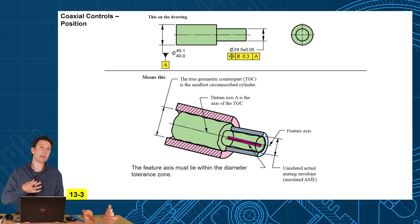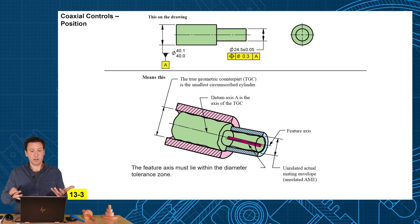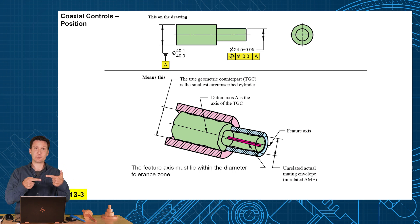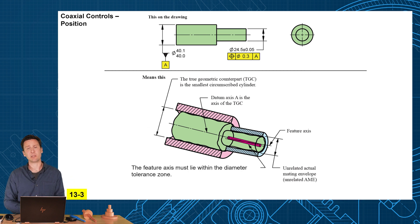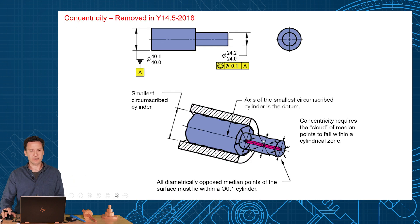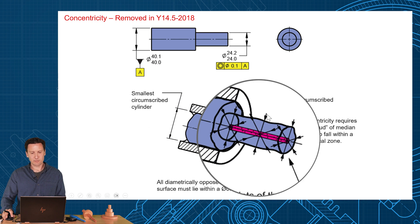In my Geotol Pro Fundamentals book, I have an example that shows what position means: it's just coaxial, one axis centered on your datum axis. And that's what I think most people mean when they want it to be concentric. They don't realize that concentricity can have some pretty funky definitions with this cloud of median points falling within the tolerance zone.